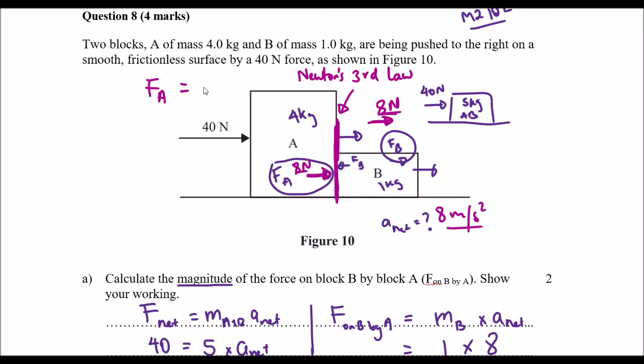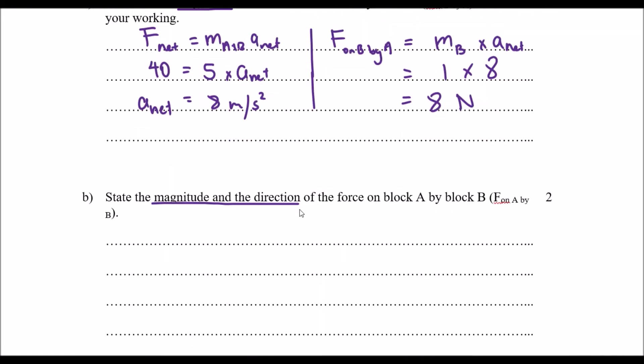we get an equal but opposite reaction force. So that means B is going to push back onto A at 8 newtons of force as well, but obviously this 8 newtons of force is in the opposing direction. So I think we already have our answer.